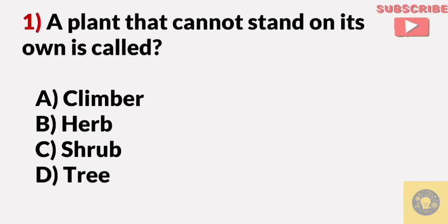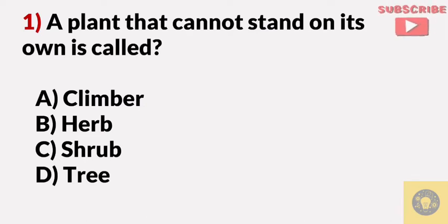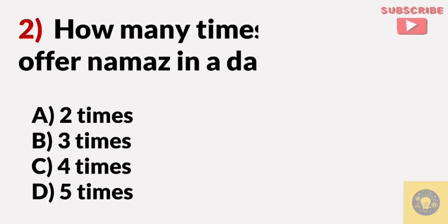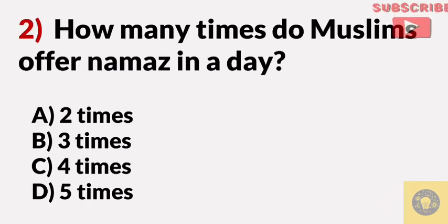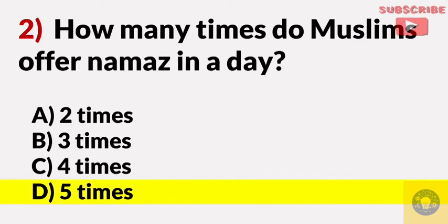A plant that cannot stand on its own is called — Answer A, Climber. How many times do Muslims offer Namaz in a day? Answer D, five times.